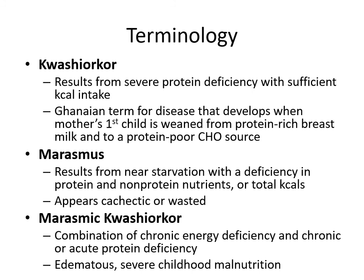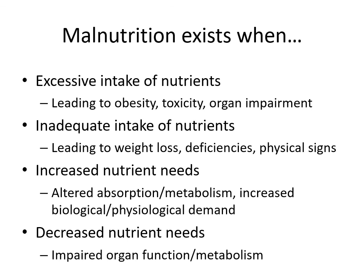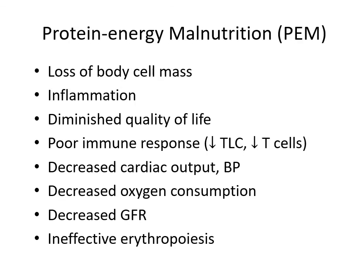Marasmic kwashiorkor is a combination of energy deficiency and chronic or acute protein deficiency, presenting with edema and severe childhood malnutrition. Malnutrition exists when there is excessive nutrient intake leading to obesity, toxicity, and organ impairment; inadequate intake leading to weight loss, deficiencies, and physical signs; increased nutrient needs with altered absorption or metabolism; or decreased nutrient needs from impaired organ function. With protein-energy malnutrition we see loss of body cell mass, inflammation, diminished quality of life, poor immune response, decreased cardiac output and blood pressure, decreased oxygen consumption, decreased GFR, and ineffective erythropoiesis.